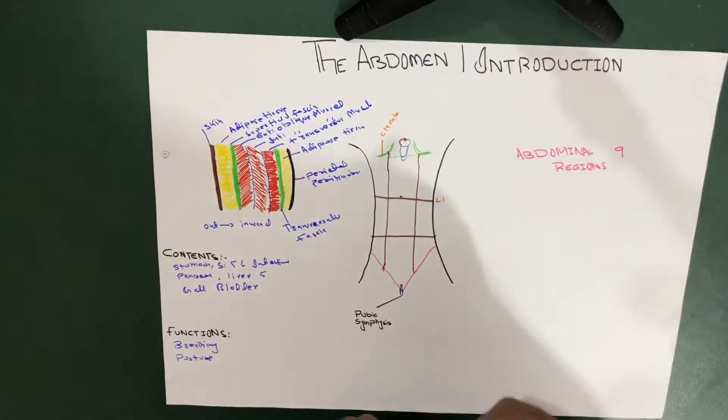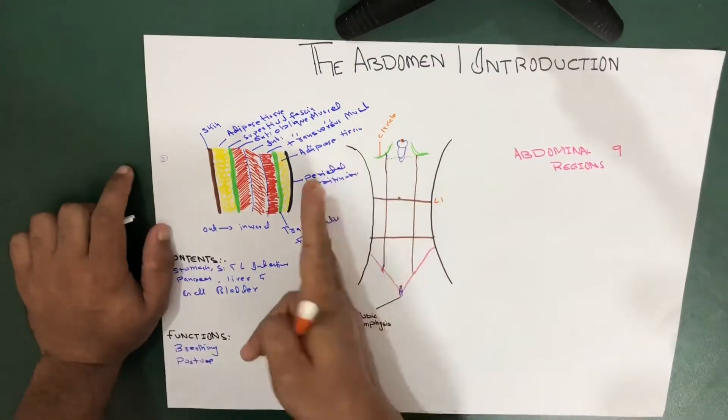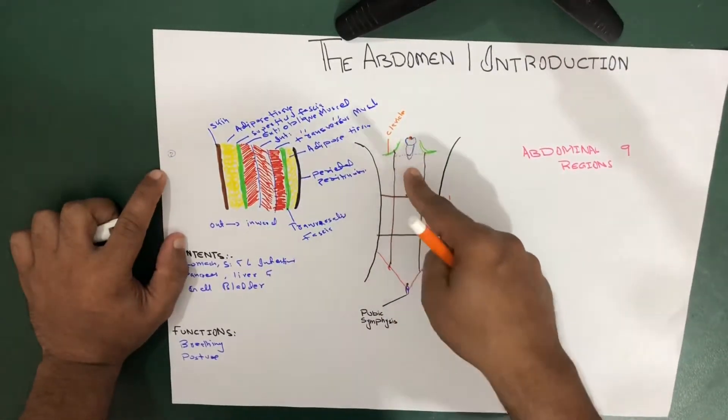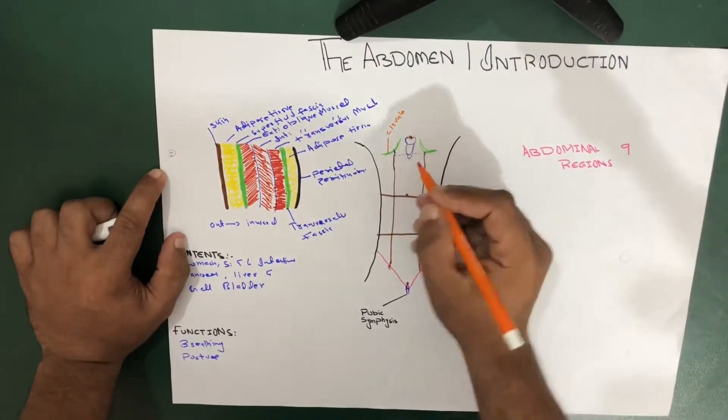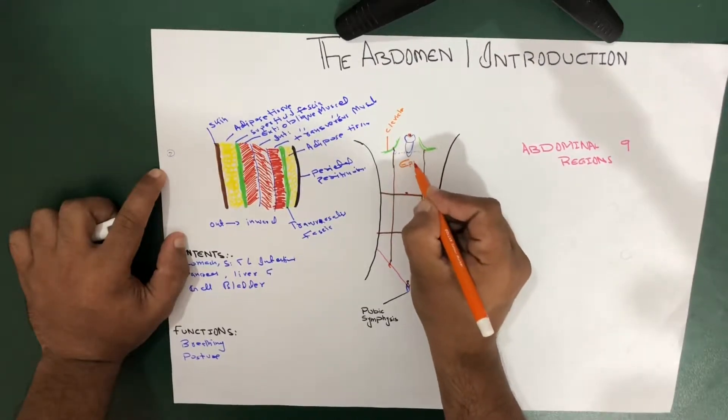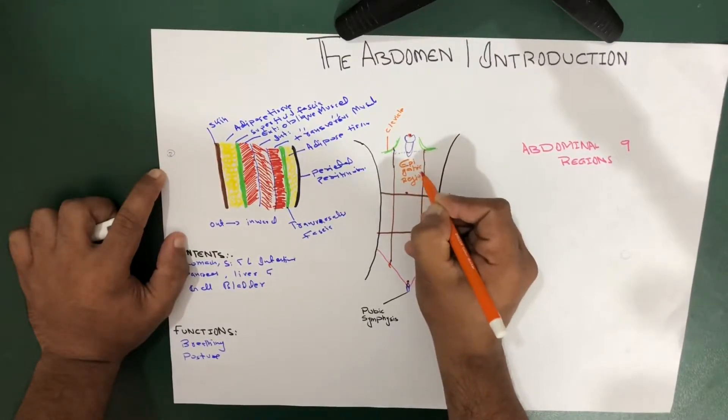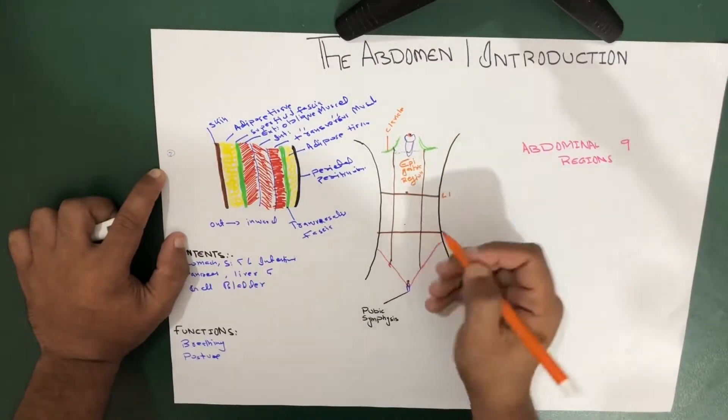So these nine regions have different names, so let me name each and every region. So consider this is the right side, this is the left side, and this is the middle region. So in here, first we got, the first region over here is called the epigastric region. All right, this is the epigastric region. This one over here, the umbilicus is located, so that's why we call it the umbilical region.